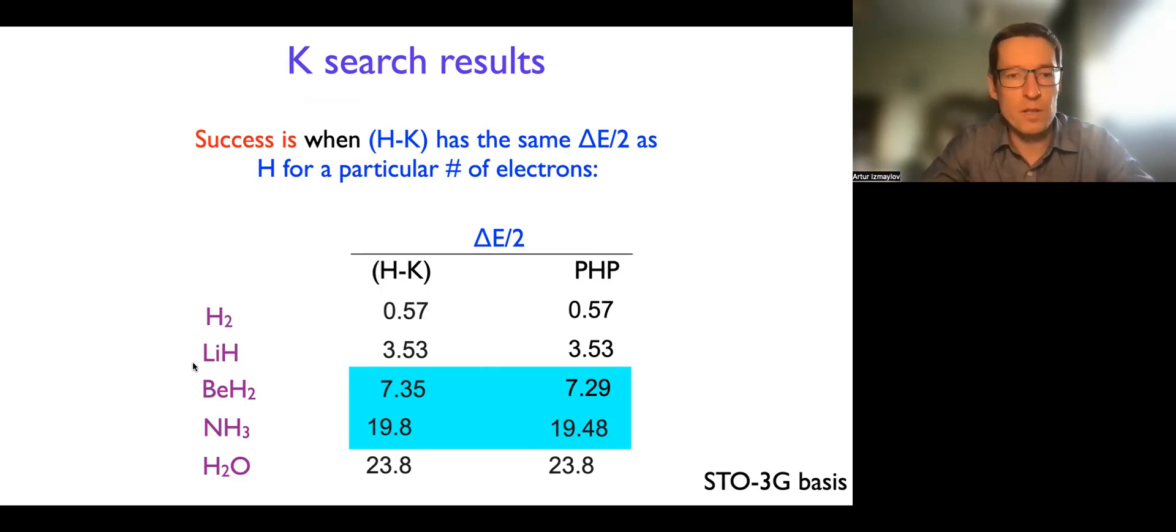And so here we look whether we are close to this ideal case with small molecules and small bases. Turns out that everywhere beyond this blue rectangle we're actually recovering the spectral range of H minus K to be the same as the spectral range of the situation where we project explicitly only to the subspace with the right number of electrons, which is the neutral case in this case, right?